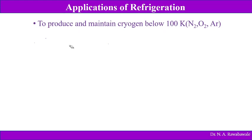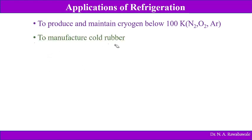Refrigeration is used to produce and maintain cryogens below 100 Kelvin — cryogens such as nitrogen, oxygen, and argon. The cryogen temperature required is 100 Kelvin, which is minus 173 degrees Celsius, and at that temperature these gases are separated, which is why they are known as cryogens. It is also used to manufacture cold rubber, as well as in oil refinery processes.